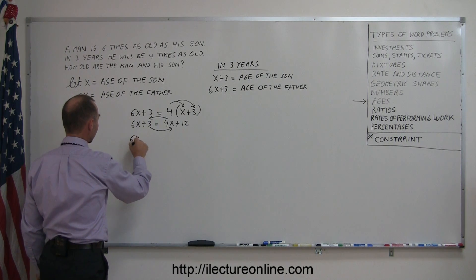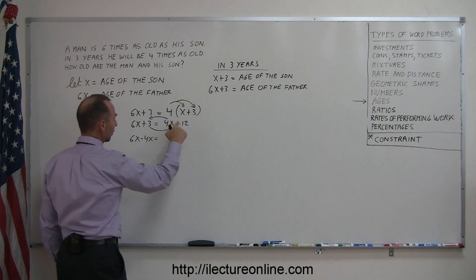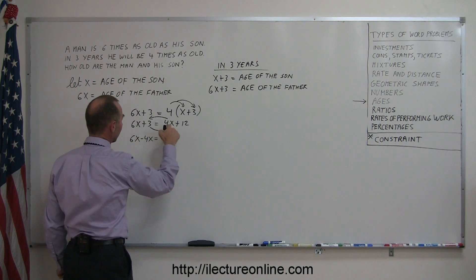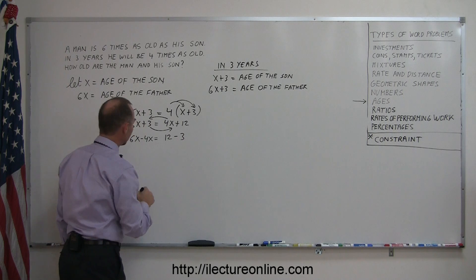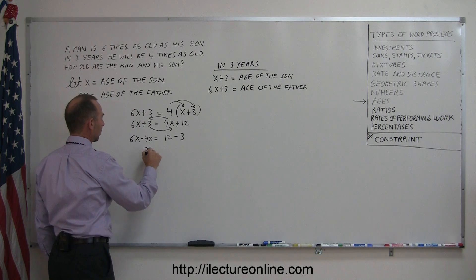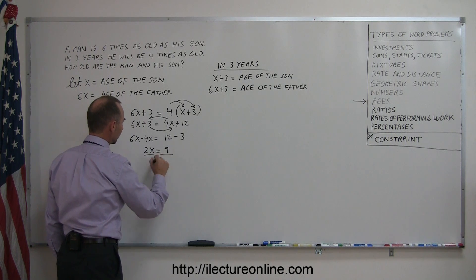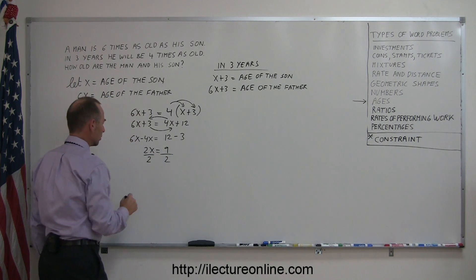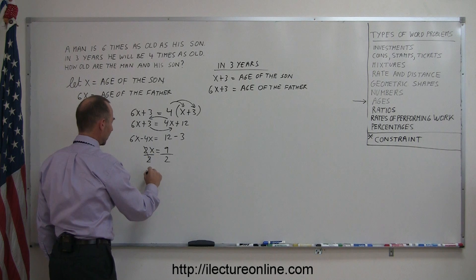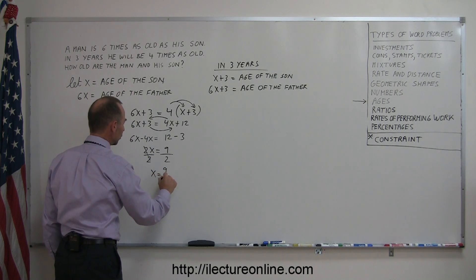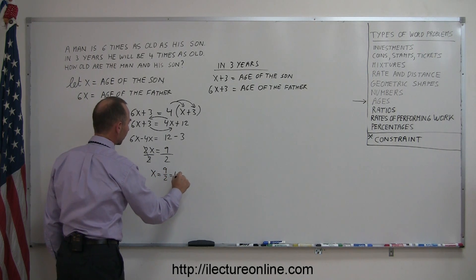We end up with 6x minus 4x is equal to 12 minus 3. 6x minus 4x, that's 2x. 12 minus 3, that's 9. And now we divide both sides of the equation by 2. That cancels out. We have x equals 9 over 2, which is 4.5.